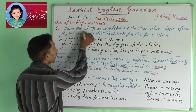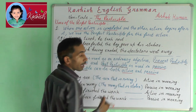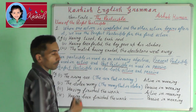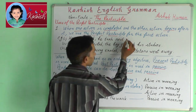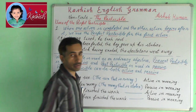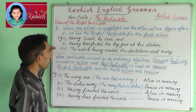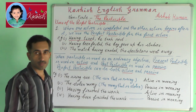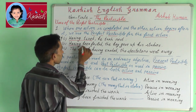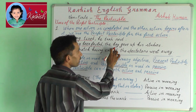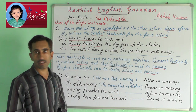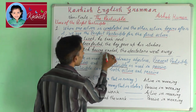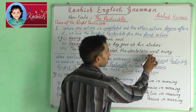Usage of perfect participle. When one action is completed and the other action begins after it, we use the perfect participle for the first action — for example: 'Having tired, he took rest.' Next: 'Having been failed, the boy gave up his studies.' Next: 'The maths having ended, the spectators went away.'